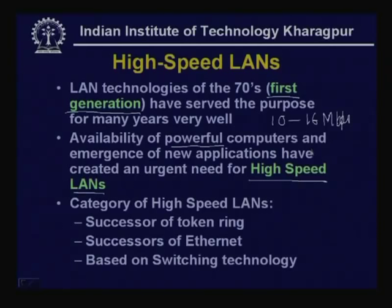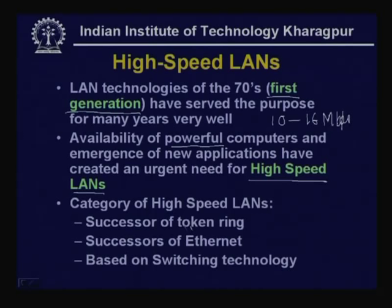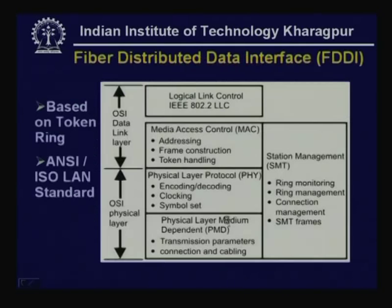Because of these two reasons, it is now possible to have high speed local area networks. In this lecture I shall consider essentially three different categories: one is the successor of token ring, which is FDDI; second is the successor of Ethernet, one of the most popular LAN technologies; and third is based on switching technology.